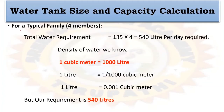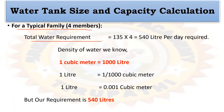For a typical family, let us assume 4 members. For that family, we have to construct one rectangular tank. The total water requirement, as already calculated according to code, is 135 liters per day per person. For 4 members, that is 135 multiplied by 4, which equals 540 liters per day required.